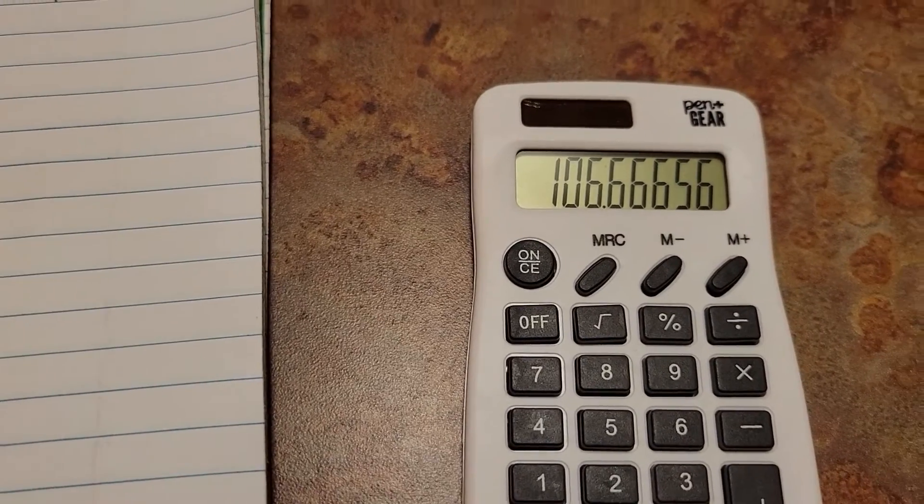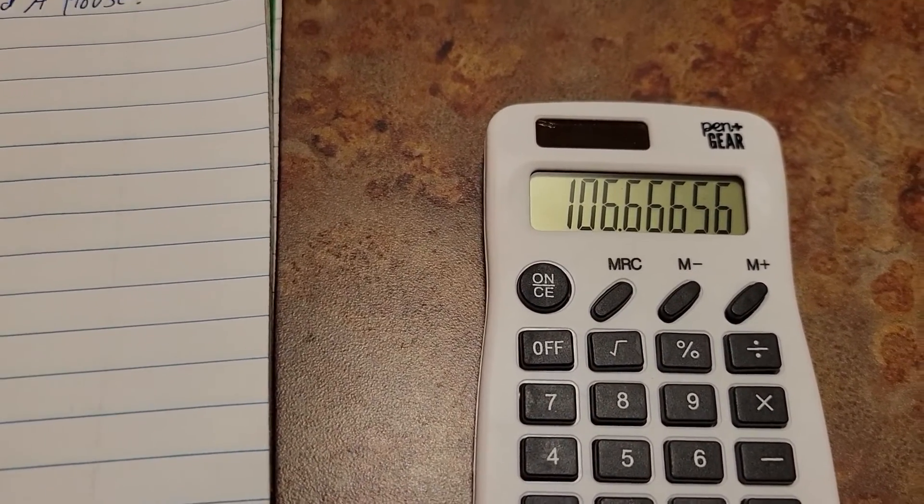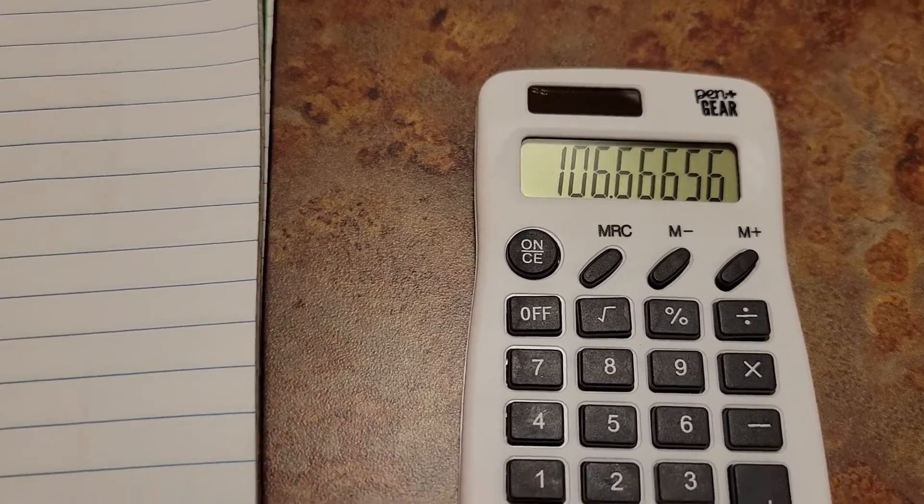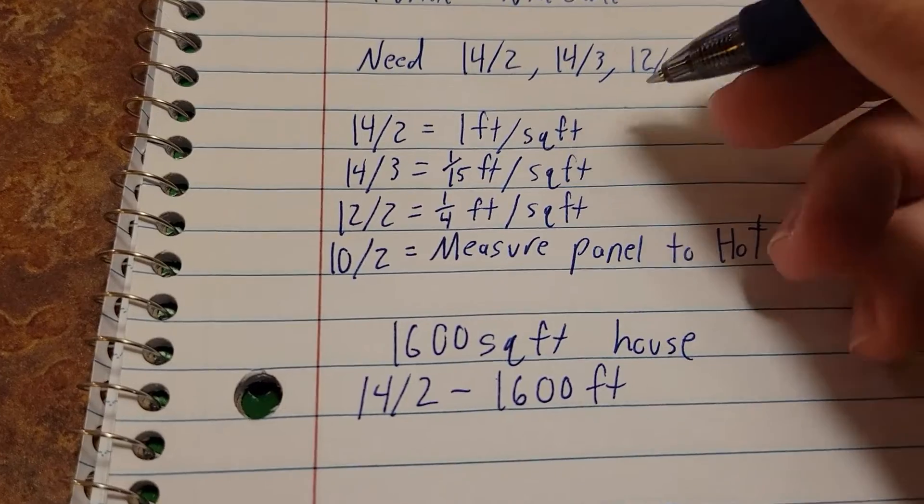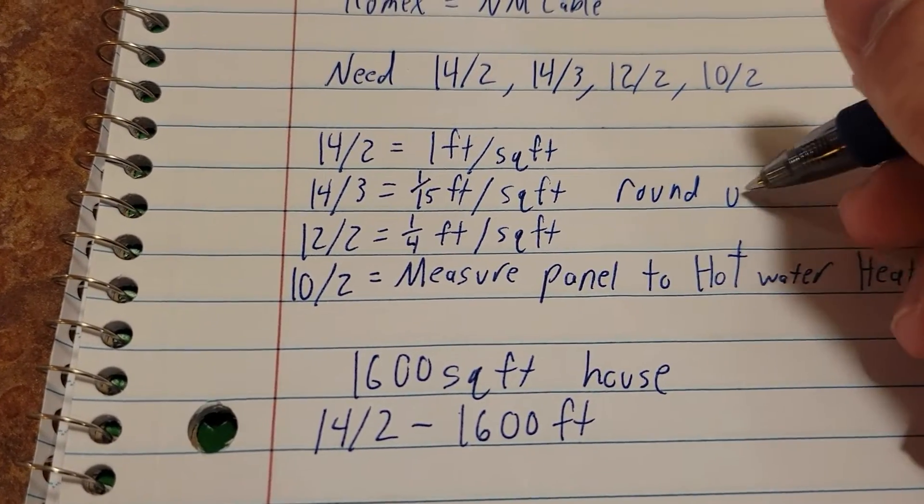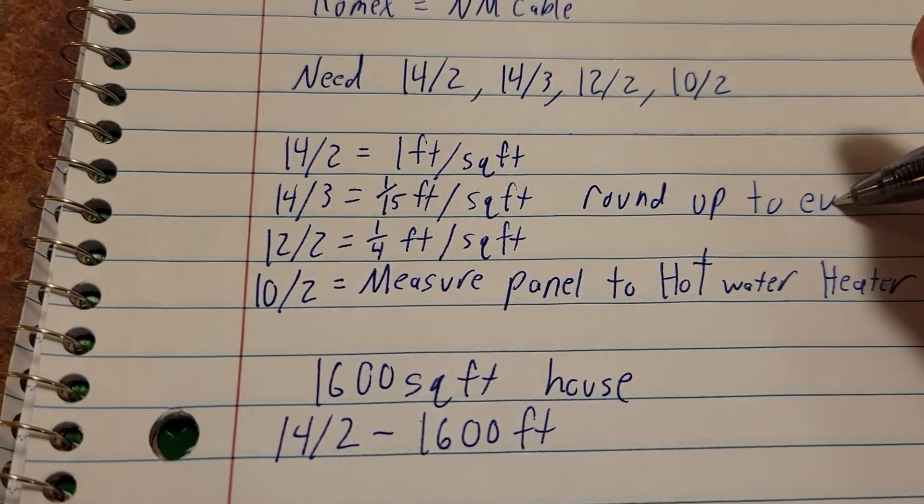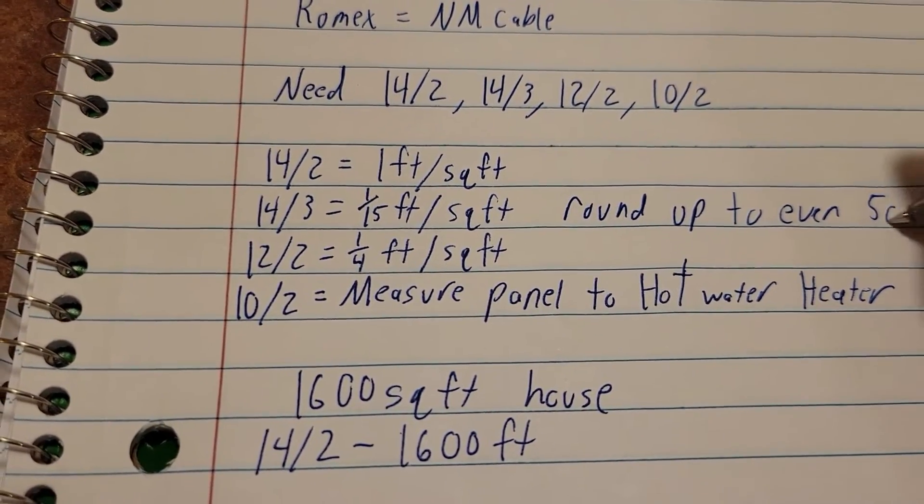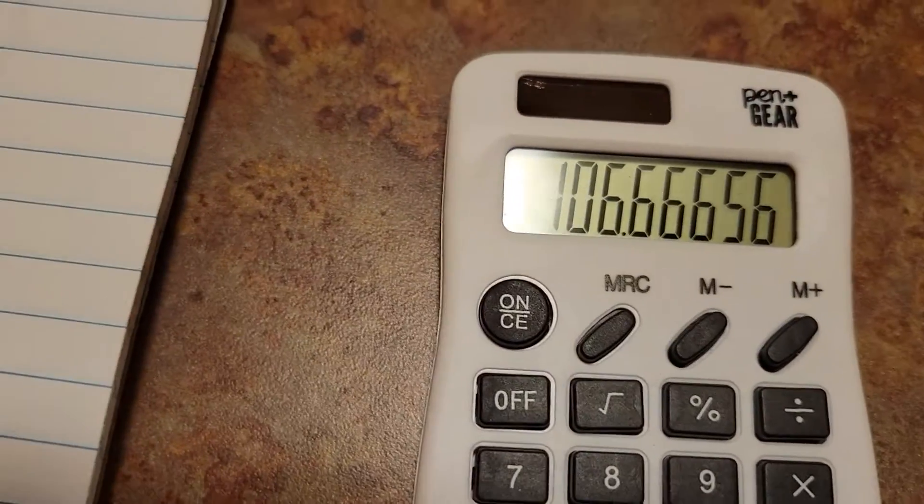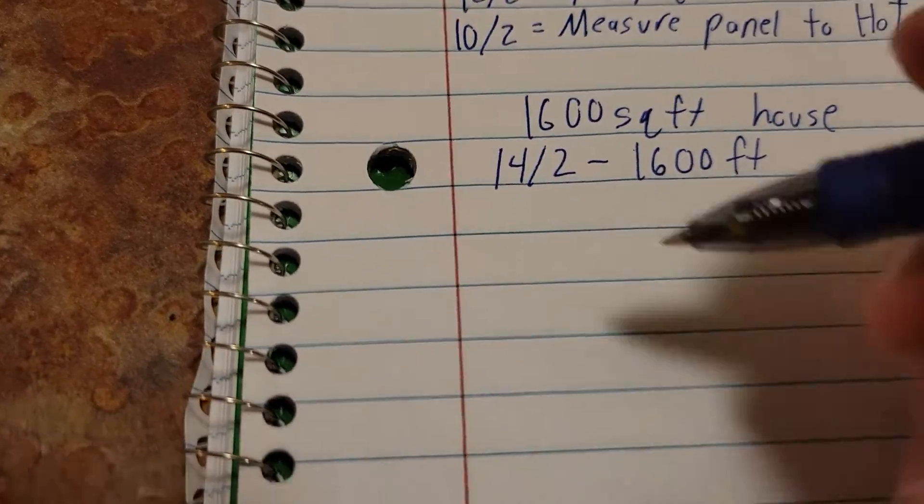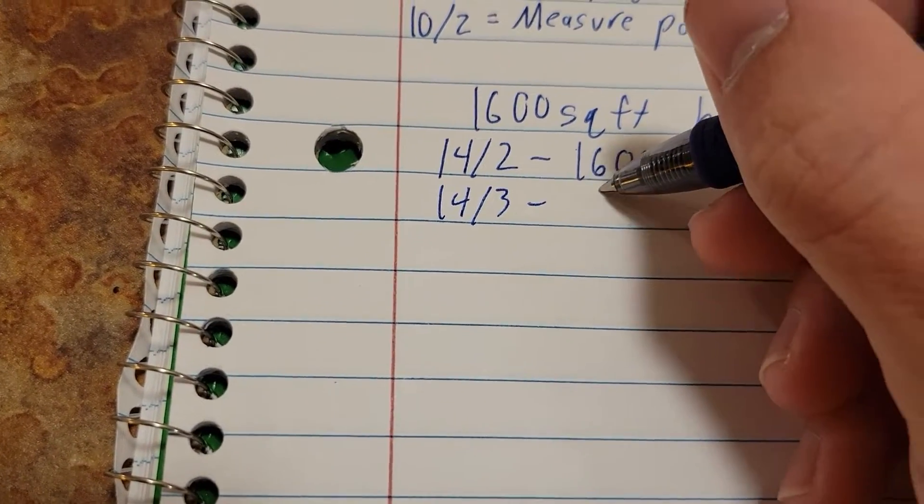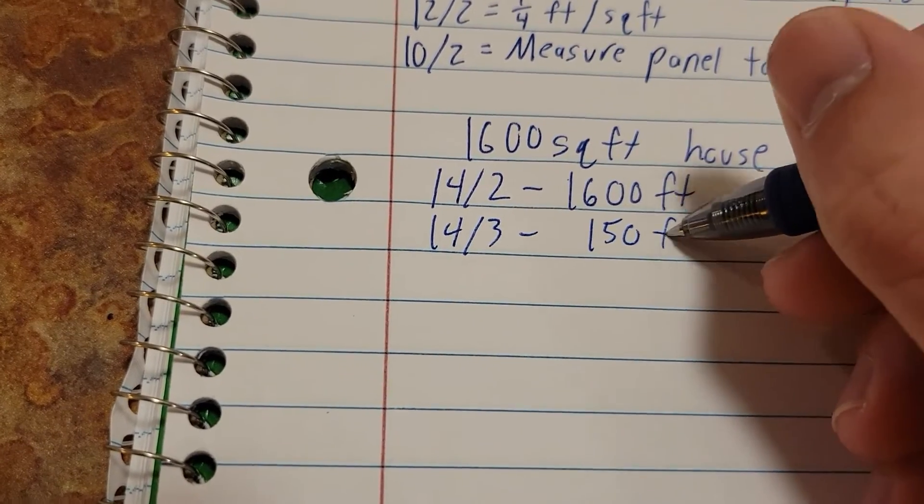So a word of advice here on your 14/3 - go ahead and round up to the nearest 50 foot. So we're going to be rounding up to 150. Let me write that up here: round up to even 50s. So since that says 106, we're going to go up to 150. So our 14/3 we're going to need 150 feet. Pretty simple, huh?